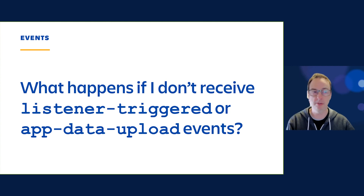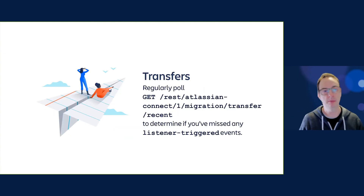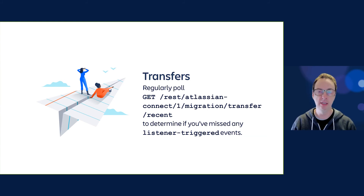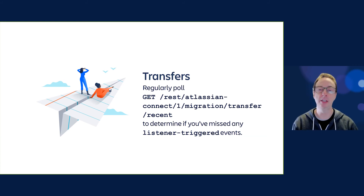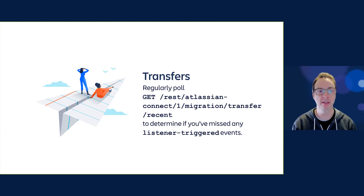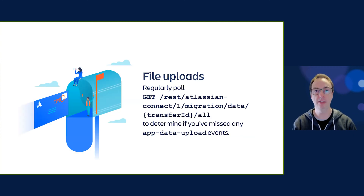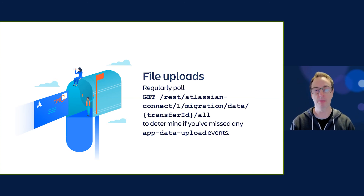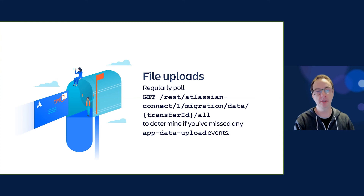If you don't receive events and you know transfers are happening, there's an endpoint called /migration/transfer/recent that lets you see the most recent transfers — up to 100 — that are not settled for one particular server and cloud instance. It's useful to check this regularly to see if you've missed any transfer IDs. Once you have transfer IDs you may have missed, you can call the /migration/transfer/{id}/all endpoint to see all files waiting to be processed, check which ones you've processed, which you missed, and start processing them.